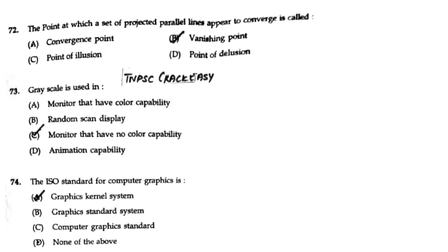The point at which a set of projected parallel lines appear to converge is called a vanishing point. Answer option D.